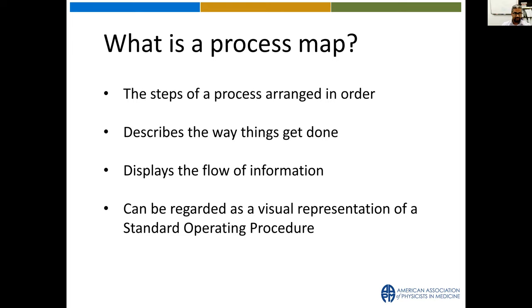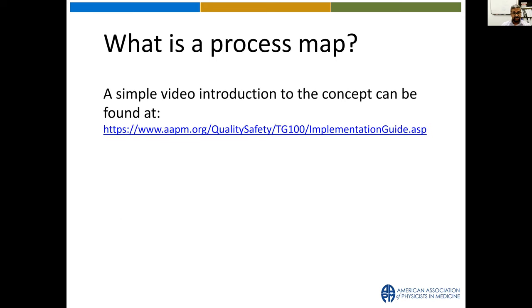What is a process map? A process map is a set of steps arranged in order that describes the way things get done in your facility. It displays the flow of information and can be regarded as a visual representation of your SOP. Process mapping is probably the simplest and most effective tool — if you want to gain the most value, just get started with the process map. It's a simple description of process steps presented so everybody in the facility gets a shared, clear understanding of the process, and it can go a long way with respect to safety. All four videos in this talk are available through the AAPM Quality and Safety Page TG100 Implementation Guide.